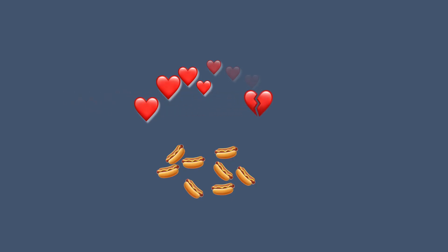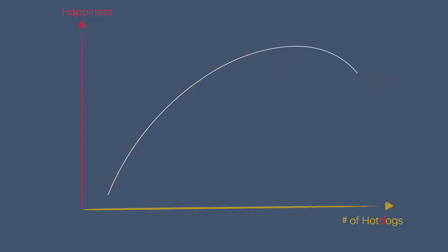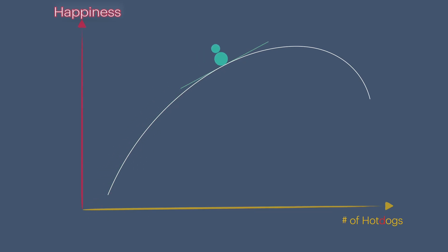At some point, that marginal return will even turn negative, meaning that every additional hot dog will cause you more discomfort. So algebraically, the relationship between your well-being and your hot dog consumption is a concave function, where the curve becomes less and less steep until it turns negative.